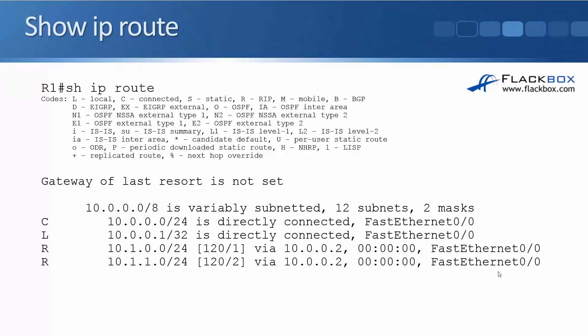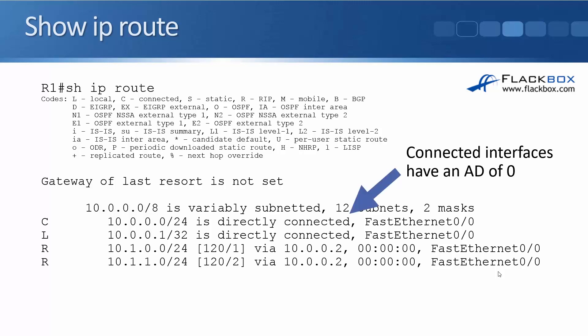We can see what's happening with a show IP route command. Show IP route will show us what routes made it into the routing table. Connected routes have got an administrative distance of 0 — they're always going to be most preferred. We've also got some routes learned from RIP. The digits in square brackets show us the administrative distance and the metric. The first value is the administrative distance — RIP has an AD of 120. The second value is the metric, so here the first route has a hop count of 1 and the second route has a hop count of 2.